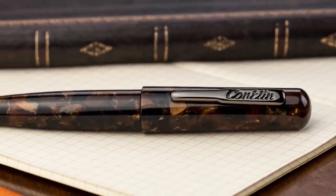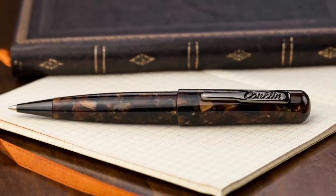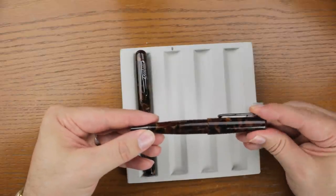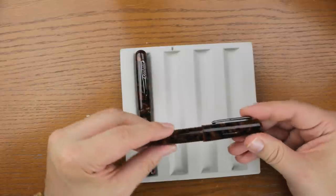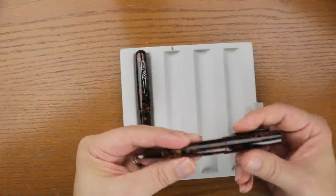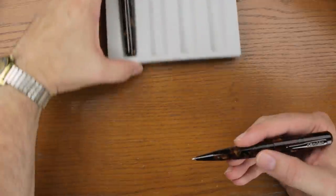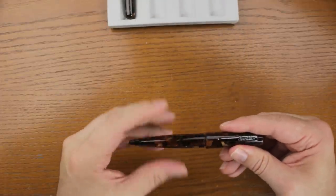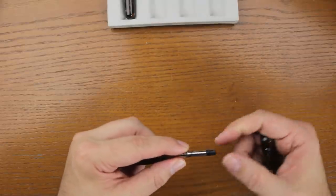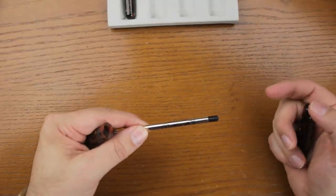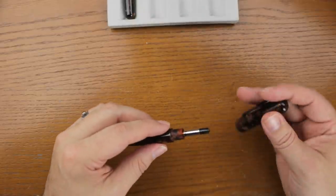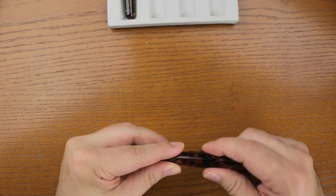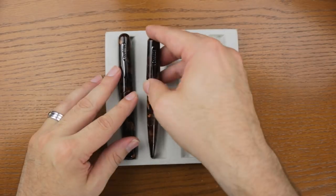So it does also come in a ballpoint, no rollerball. And same idea here. We've got the imprint on the barrel. Same nice tight mechanism and twist to operate. And unscrew. And it takes a standard Parker-style ballpoint refill. So a nice complement to the pen. If you do use ballpoints, you can have a set.